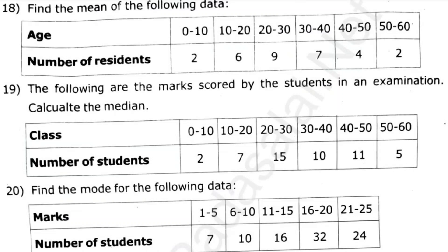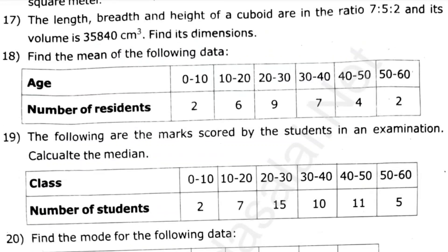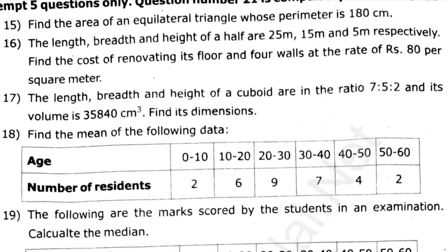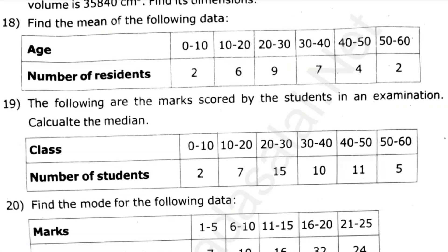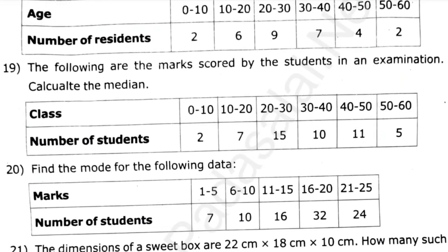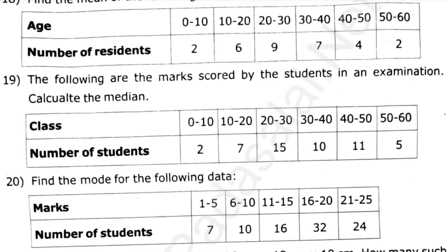Find the mode of the following data. The following marks scored by the students in the examination. The median is very simple. 18 means mean sum. Mean, medium and mode 5 mark is very simple. If you read the answer is easy to find 525. Let's see how much this box is.